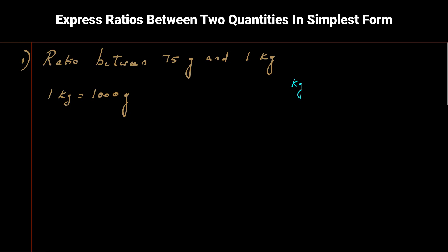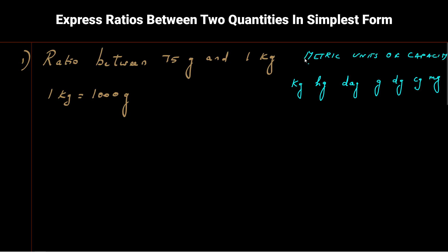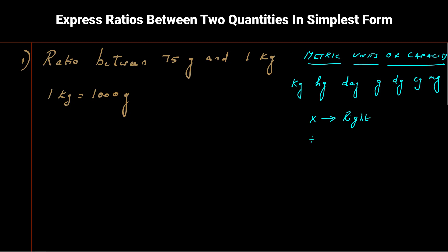On the metric number line we have: kilogram, hectogram, decagram, gram, decigram, centigram, milligram. Kilogram is the highest and milligram is the least. To convert from one unit to another, if you are moving towards the right you multiply, and you divide when moving towards the left. To convert kilograms to grams we move towards the right.